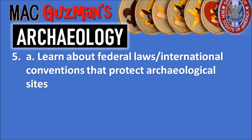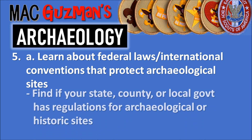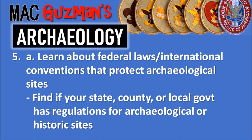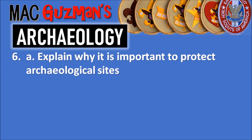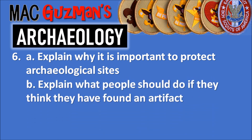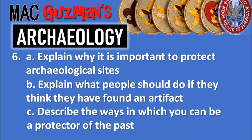Moving on to requirement number five: 5a says to learn about federal laws and international conventions that protect archaeological sites, and find out if your state, county, or local government has regulations for archaeological or historic sites. 5b says to identify a national, international, or local organization that helps protect archaeological sites. 6a says to explain why it is important to protect archaeological sites. 6b says to explain what people should do if they think they have found an artifact. 6c says to describe the ways you can be a protector of the past.